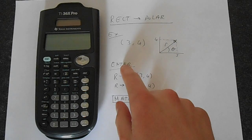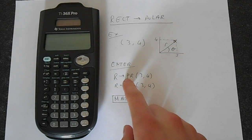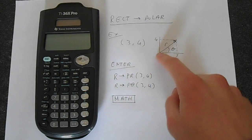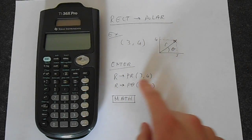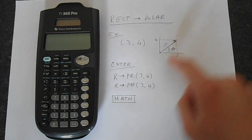So to do this what we have to do is enter this r→P function, and this r is telling you this r here. Then we put in 3, 4 and that will give us the r value, so this length here.